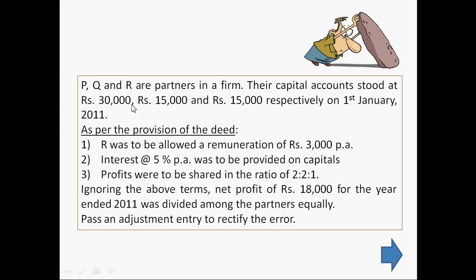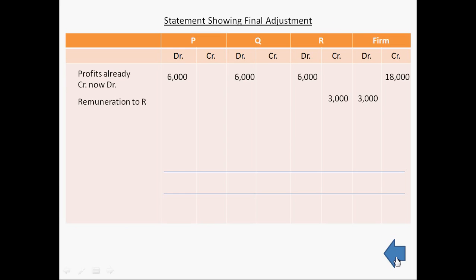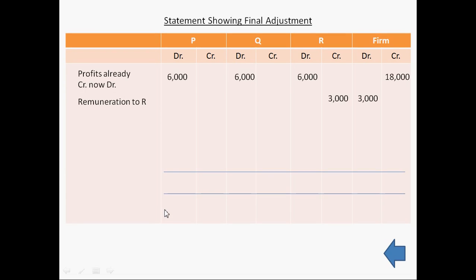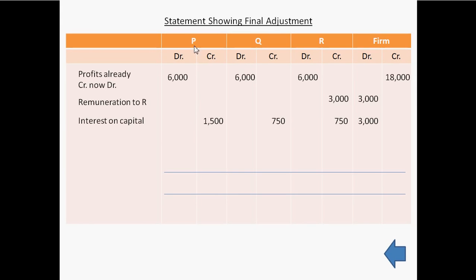P's capital is Rs 30,000 and its 5% interest is Rs 1,500. Q's capital is Rs 15,000 and its 5% interest is Rs 750. R's capital is Rs 15,000 and its 5% interest is again Rs 750. So we will allow Rs 1,500 to P, Rs 750 to Q and Rs 750 to R as interest on capital, writing these amounts on the credit side of each partner's capital account. The total interest of Rs 3,000 will be written on the debit side of the profit and loss appropriation account as it is a loss to the firm.